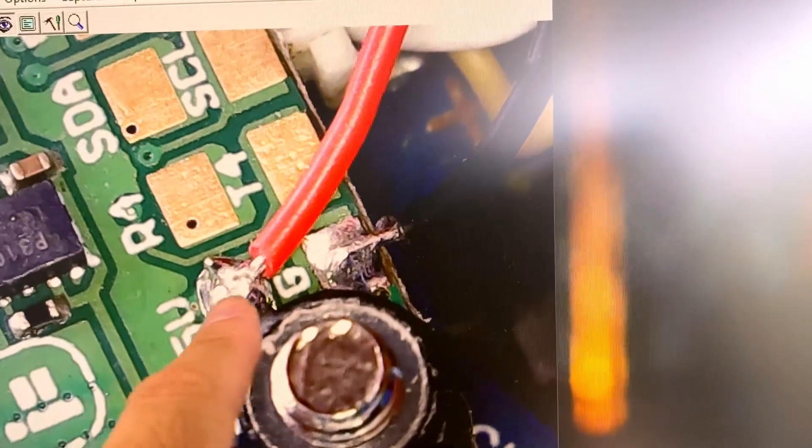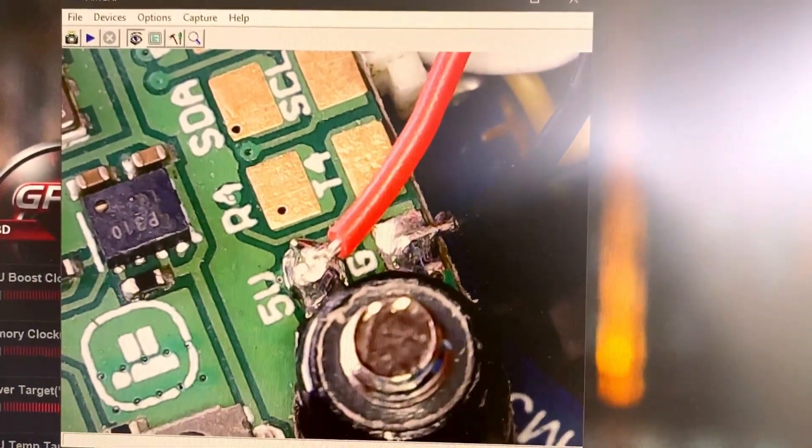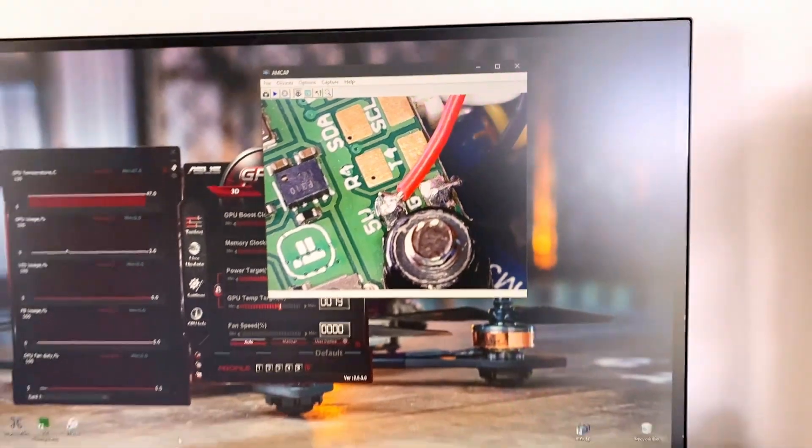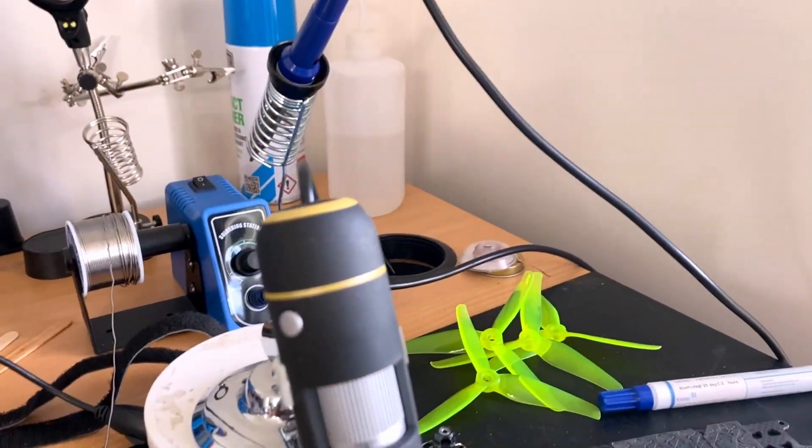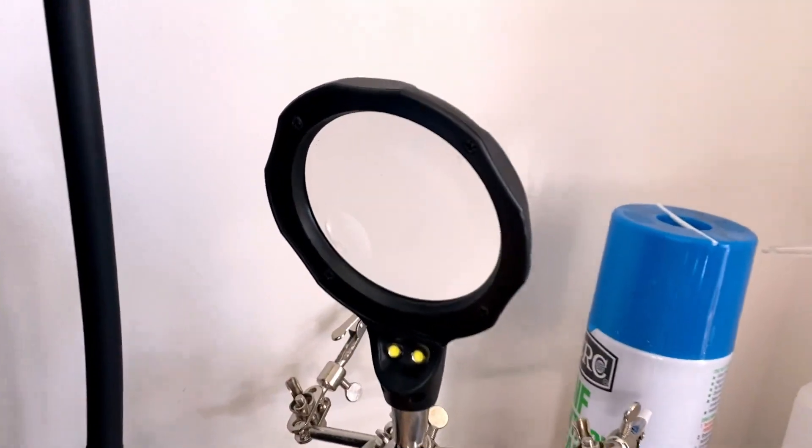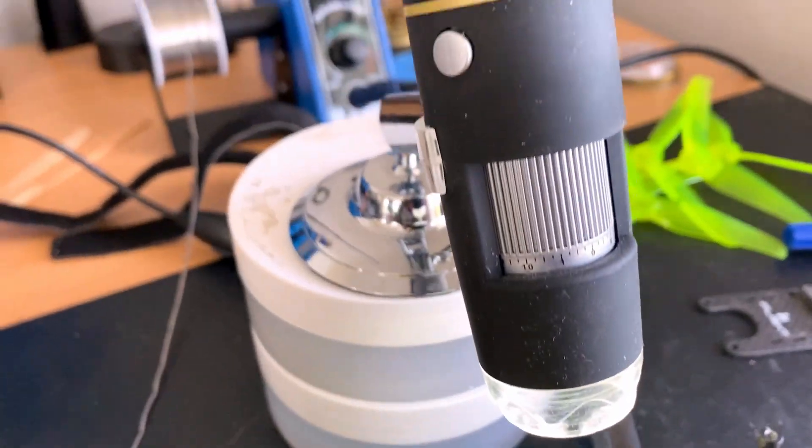That's the two small solder joints that I had to do. They're very tiny, so it helps when you've got a microscope like that. It's way better than those magnifying glass things.